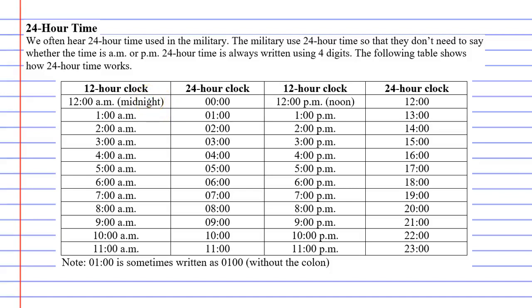In this video we're going to talk about 24-hour time. In case you don't know what 24-hour time is, it's something they use in the military a lot. If you ever watch a military video they'll talk about the time and say it's 2000 hours, 700 hours, or even zero hundred hours. The reason they do this is to avoid having to say whether it's a.m. or p.m. and to avoid the confusion between them.